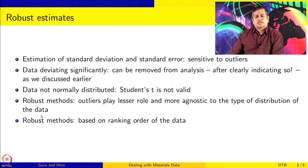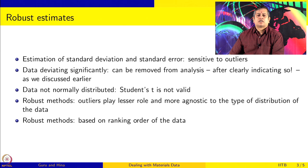Robust methods are based on the ranking order of the data. They are methods which ensure that outliers do not play a significant role and it does not really matter what the type of distribution is.